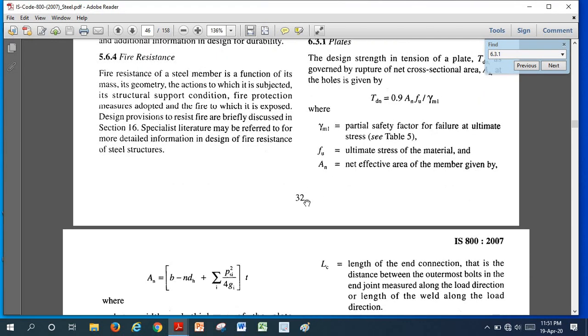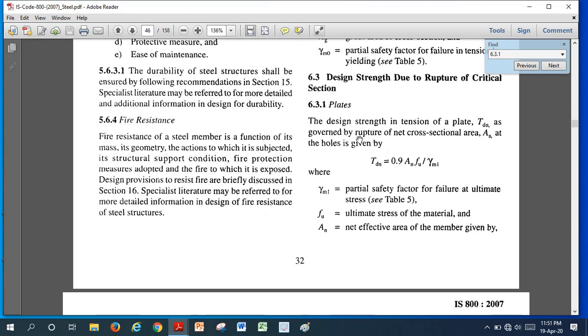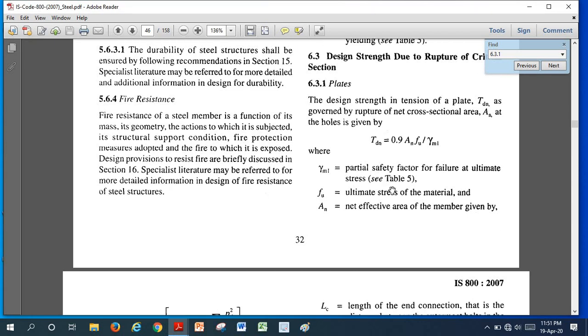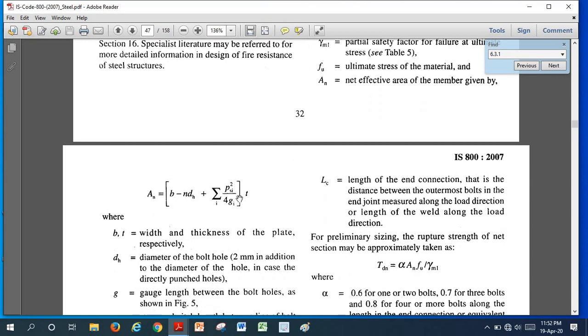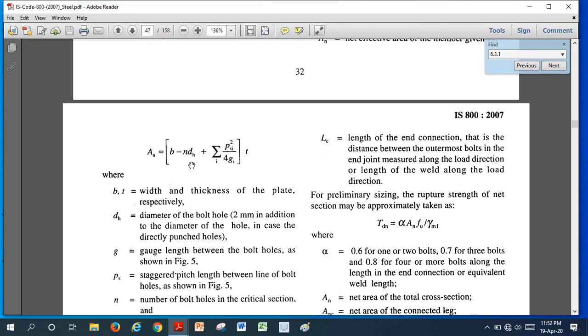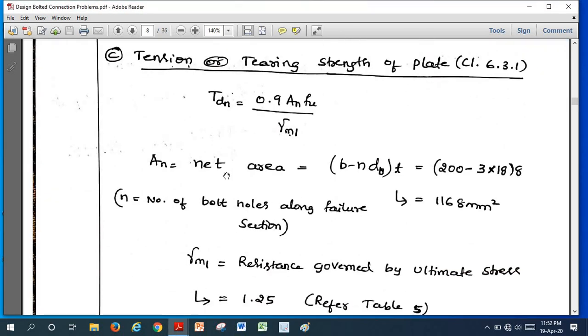So this one we should calculate according to section 6.3.1 of IS-800. Here if you look into IS-800, here this is 6.3.1, it will come in page number 32. This is the formula: design strength of the plate Tdn as governed by the rupture in section area Aₙ at the bolt holes, given by Tdn = 0.9 Aₙ fᵤ / γₘ₁, where γₘ₁ is a partial factor for ultimate failure at ultimate stress. We should see the table number 5, ultimate strength of the material, that is plate. Aₙ is net effective area of the member, given by this formula. This is applicable for staggered pitch, here there is no staggered pitch here. We should take this formula: b - n × dₕ, where n is the number of bolts along the section, dₕ is the diameter of the bolt hole, b is the width of the plate.